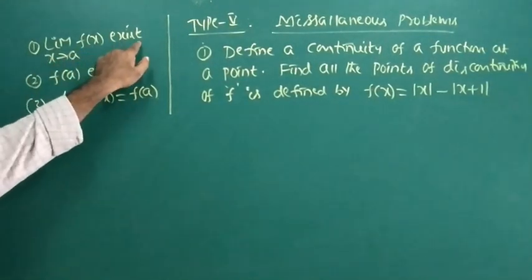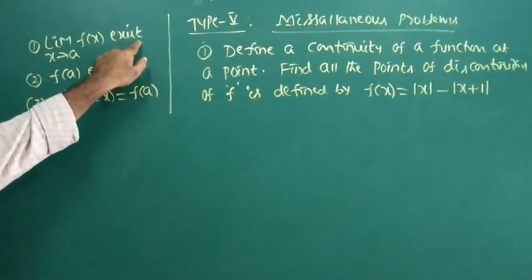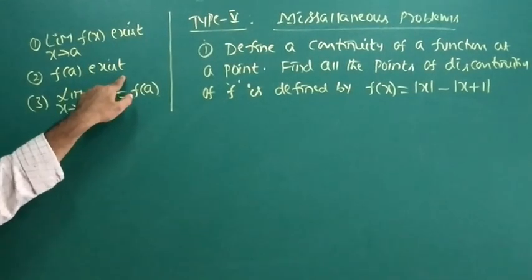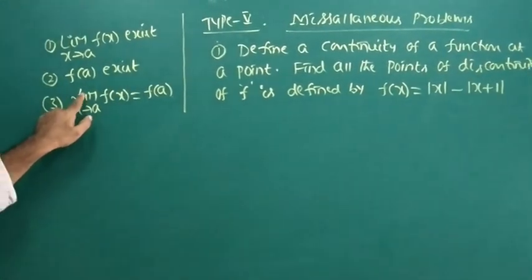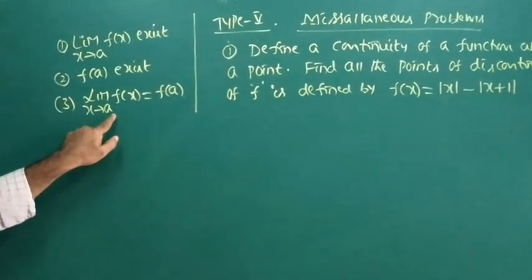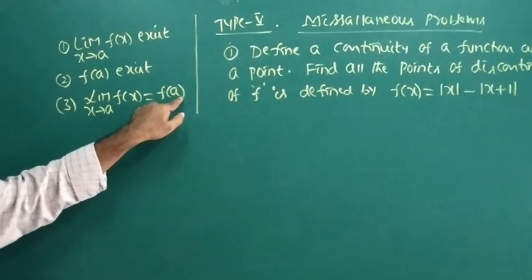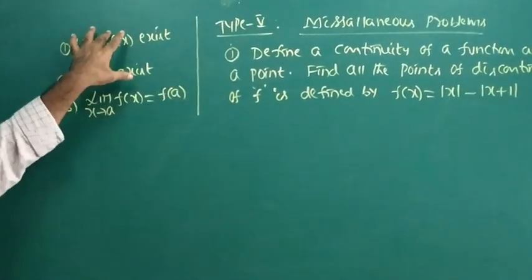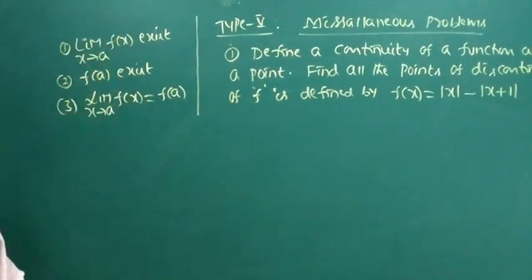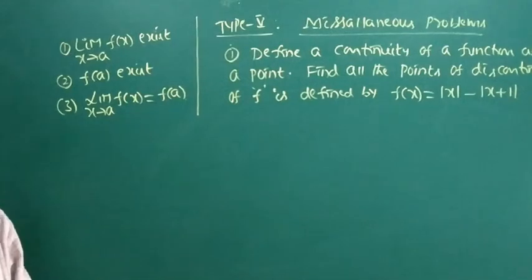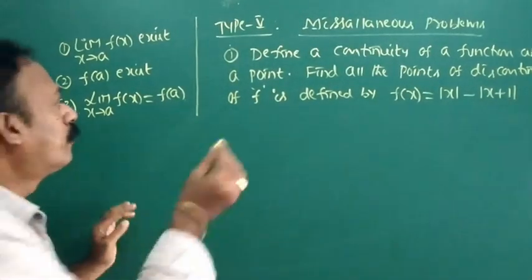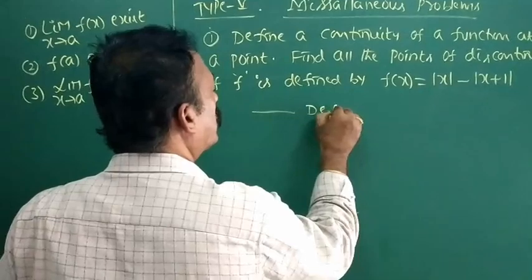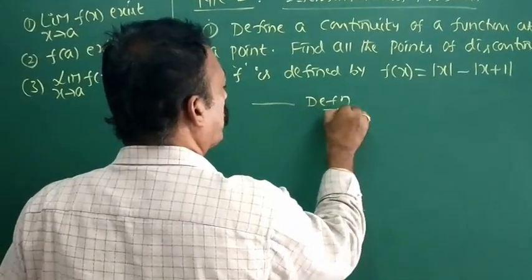The first condition is the limit as x tends to e of f(x) exists. The second one is f of e exists, and the third one is the limit as x tends to e of f(x) is equal to f(e). If it satisfies all the conditions, then the function is said to be continuous.